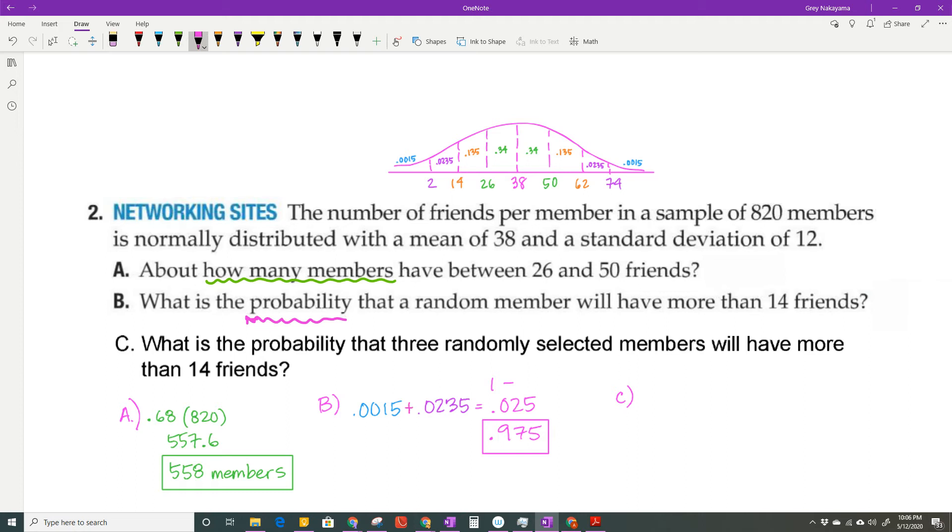Part C, what is the probability? So again, this one is asking for probability. So I'm going to have an answer less than one. What's the probability that three randomly selected members will have more than 14 friends? So three randomly selected members. We just answered part B was the probability that one random member will have more than 14. If I want to know about three of them, then this time I'm actually going to take that to the third power because that's 0.975 times 0.975 times 0.975. Because those are independent events, but I multiplied them all together. So when you multiply them, you get that long crazy decimal, round it to three places like we do on our quizzes, and you get 0.927.